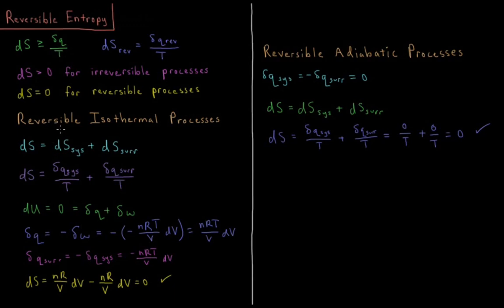Let's look at what the entropy change of the universe is for reversible isothermal expansion and compression of an ideal gas. The total change in entropy is going to be the sum of the entropy change of the system plus the entropy change of the surroundings. So dS equals the heat of the system over temperature of the system plus the heat of the surroundings divided by temperature of the surroundings.